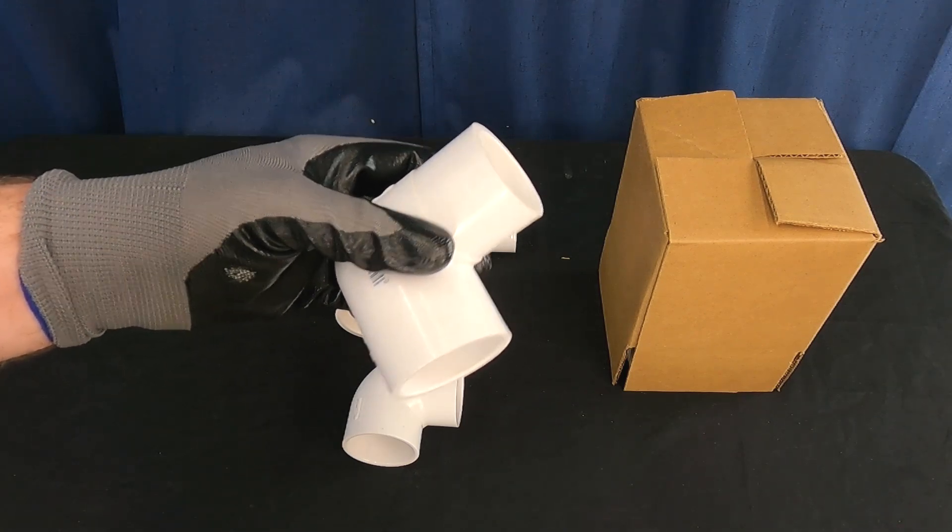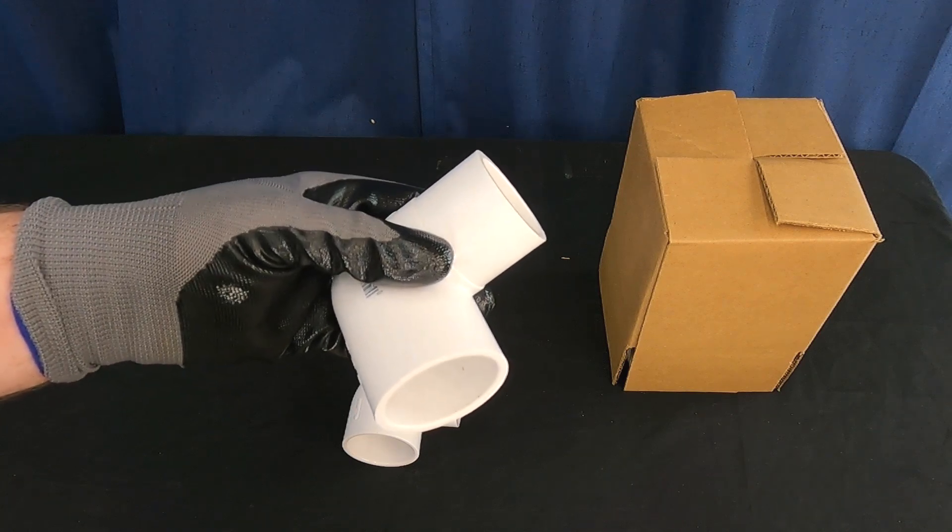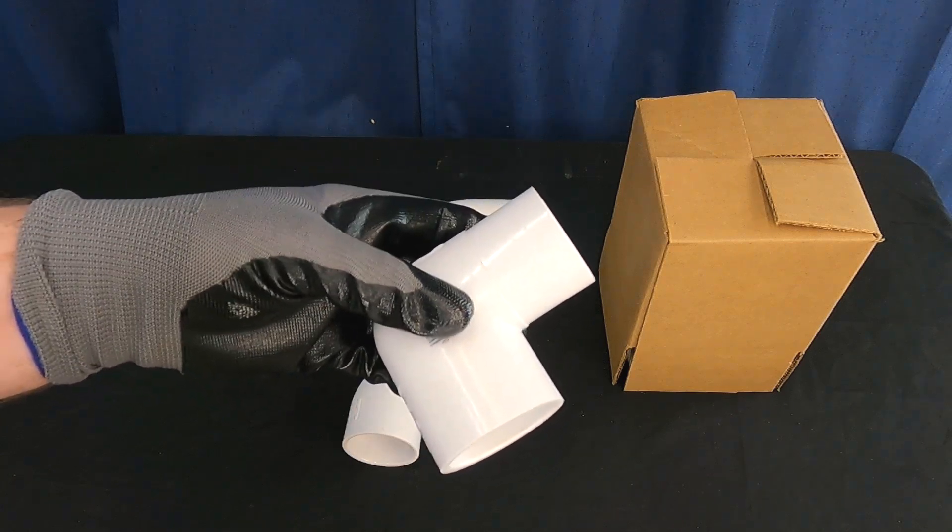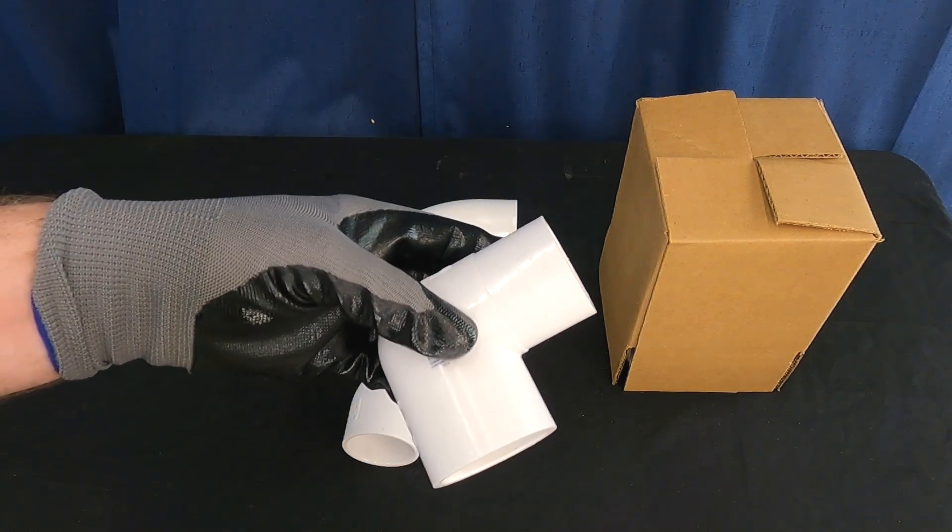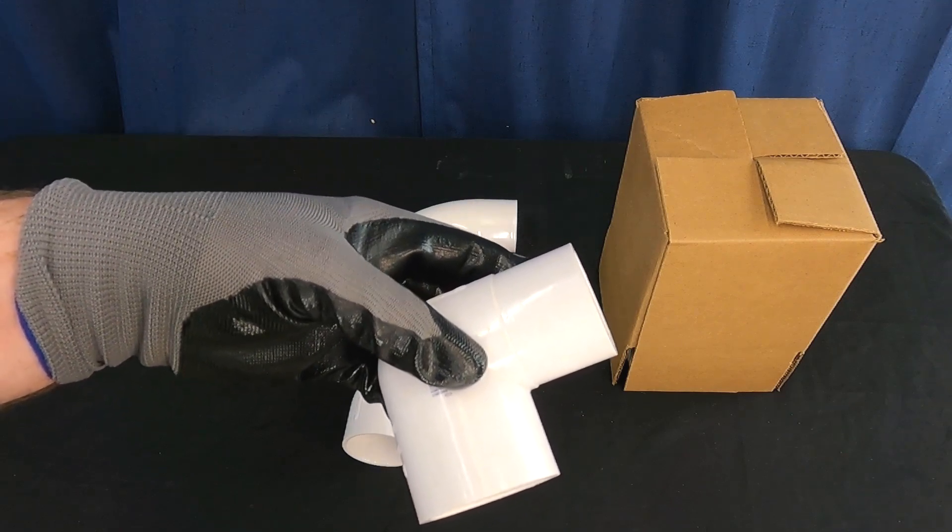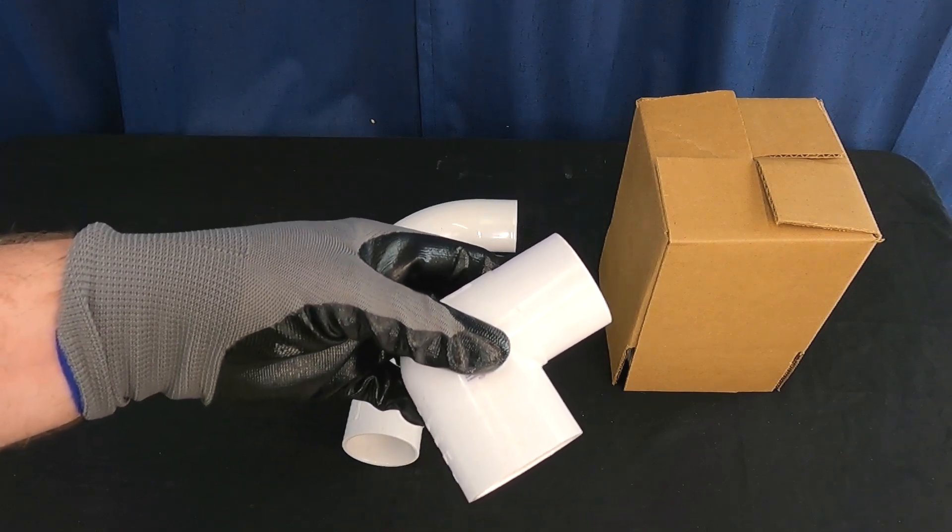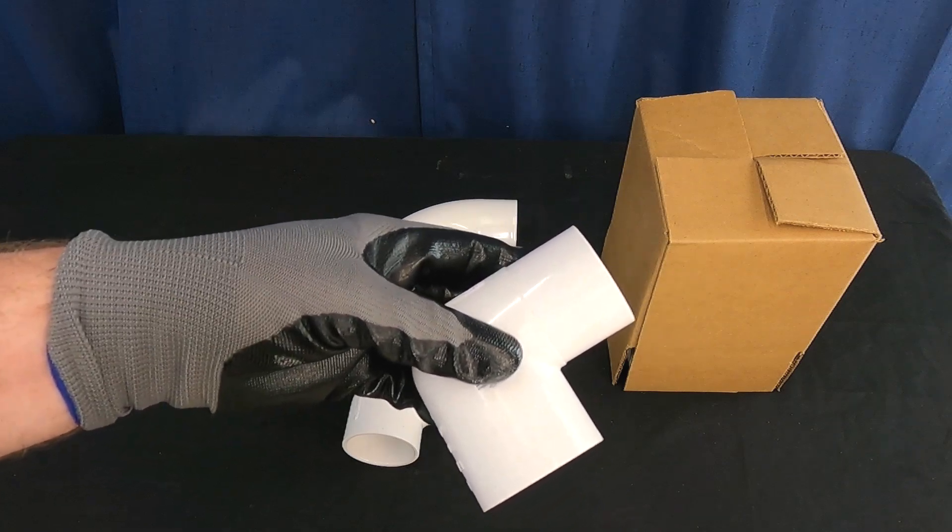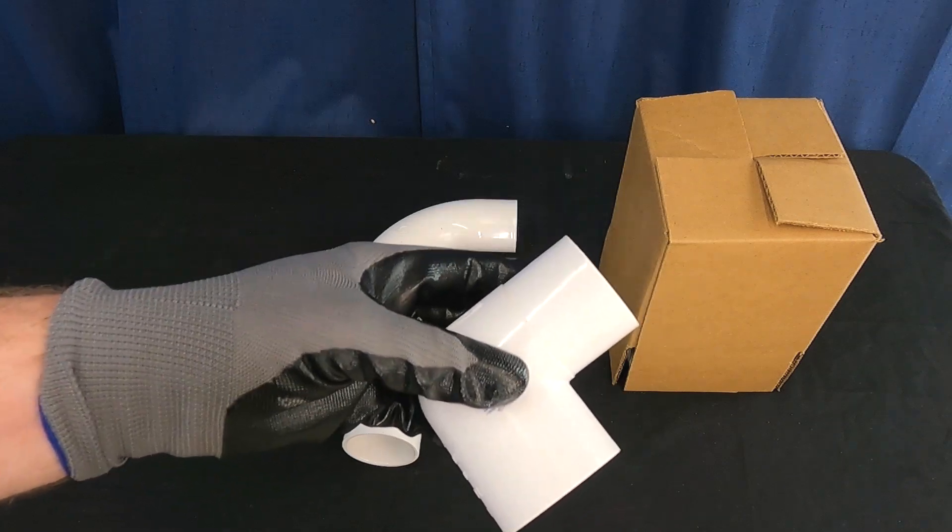versus every other option that you have available to you to negotiate a corner whether it be a short radius elbow or a sweep elbow or two 45s you glued together or some heat bent pipe. There's a lot of options to use and all of them are better than this guy here.